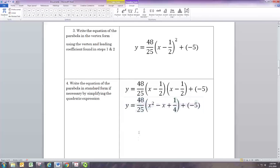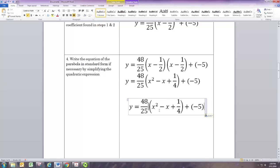Now we need to distribute that 48/25. So 48/25 times x squared, 48/25 times negative x, and 48/25 times 1/4. With the 1/4, the 4 and the 48 can both be divided by 4, so we go back to 12/25.